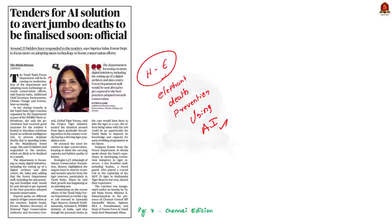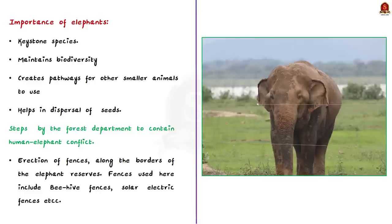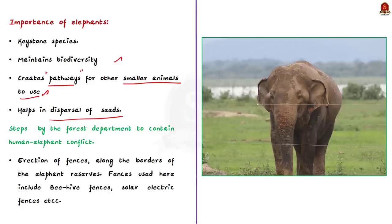Let us see briefly about the importance of elephants in the forest ecosystem. Elephant is a keystone species. They play an important role in maintaining the biodiversity of the ecosystem in which they live. When elephants eat, they create gaps in the vegetation. These gaps allow new plants to grow and create pathways for other small animals to use. They are also one of the major ways in which trees disperse their seeds, and some species rely entirely upon elephants for the seed dispersal function.